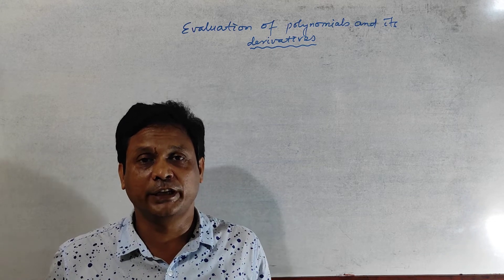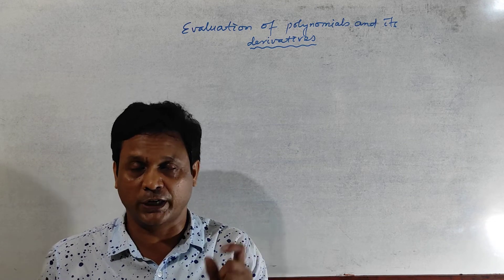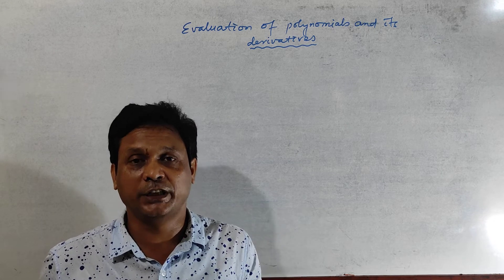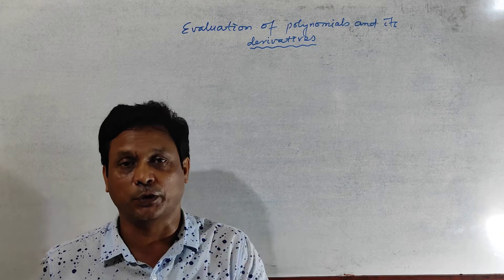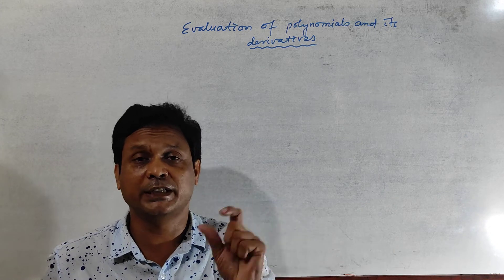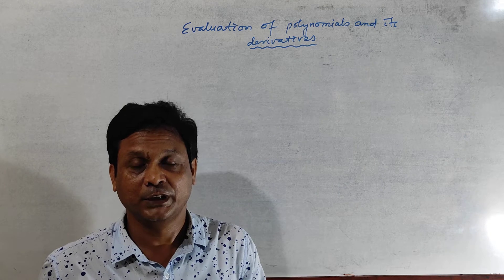And how to find out the value of a polynomial at a certain point, and how to find out the derivative, first derivative, second derivative, third derivative, fourth derivative of a polynomial at a particular point, without differentiating. How to find out its value?